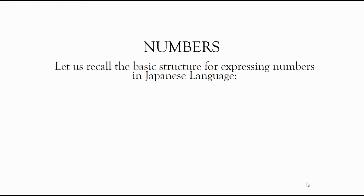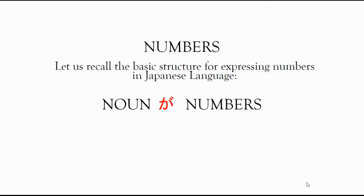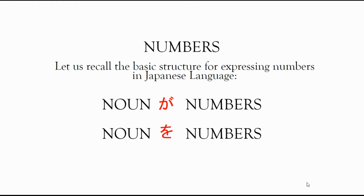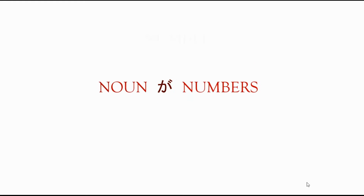But before that, let us recall the basic structure for expressing numbers in Japanese language. In our past lesson, we already covered noun ga numbers and noun o numbers. So let's review them briefly so we can more easily understand the meaning of particles mo and shika.